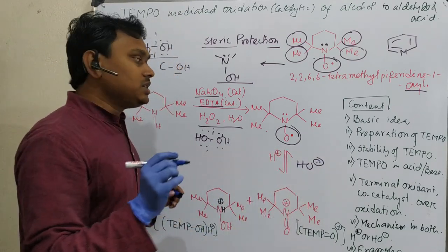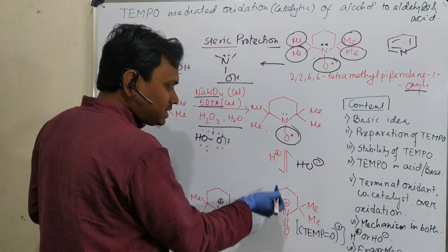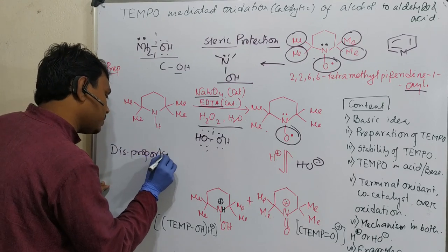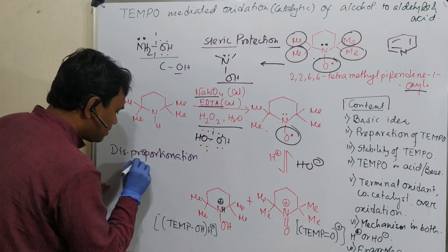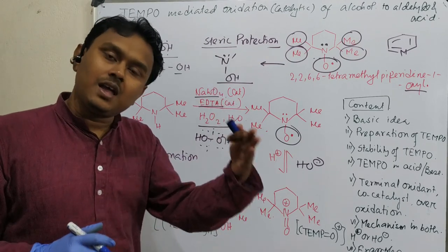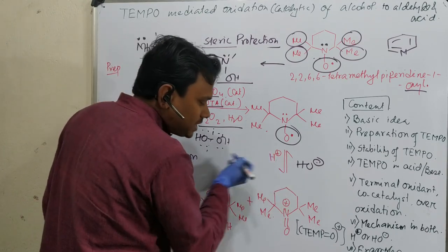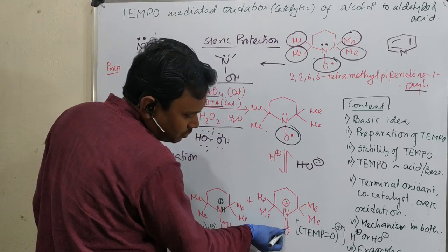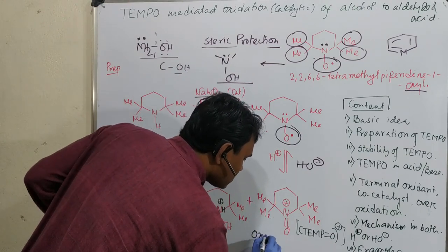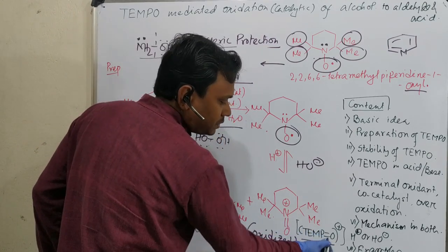What is the stability? This molecule is stable but in presence of acid, it undergoes disproportionation reaction. Means an intermediate oxidation state is divided into one higher and one lower. With H plus, one produces this N double bond O with a positive charge. This is the oxidized form.